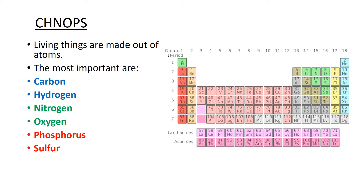Living things are made out of atoms. The six most important atoms you need to know in a biology class are carbon and hydrogen, nitrogen and oxygen, phosphorus and sulfur. The color coding here has no significance other than that I want you to remember them in pairs — it'll help you remember them. Carbon and hydrogen, nitrogen and oxygen, phosphorus and sulfur. Looking at the periodic table, these elements are basically grouped together: carbon, nitrogen and oxygen, phosphorus and sulfur right here. And hydrogen is kind of over here by itself.